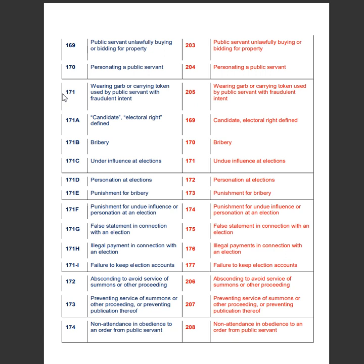Section 171A of the IPC deals with candidate and electoral right defined, whereas Section 169 of the BNS deals with candidate and electoral right defined. Section 171B of the IPC deals with bribery, whereas Section 170 of the BNS deals with bribery. Section 171C of the IPC deals with undue influence at elections, whereas Section 171 of the BNS deals with undue influence at elections.